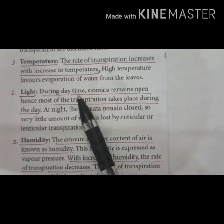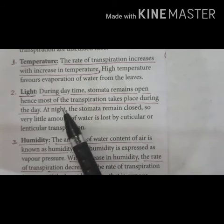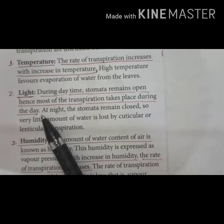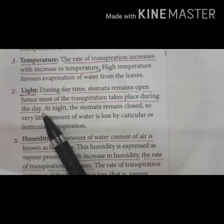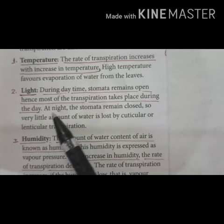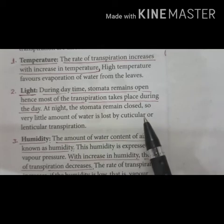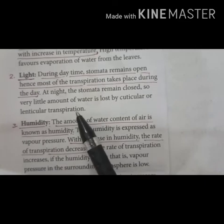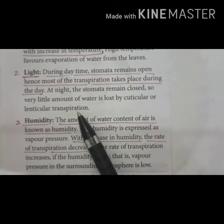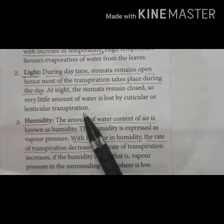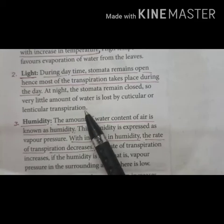Next is light. During daytime stomata remain open, hence most of the transpiration takes place during daytime. So if more light is there, then more transpiration will take place. But at night, the stomata remain closed, so very little water is lost by cuticular or lenticular transpiration, because lentices remain open during both day and night, but stomata remain open during daytime only and are closed at night.